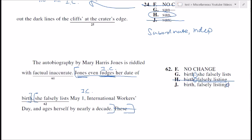There's another option placing the colon after 'falsely listing,' so the sentence would read 'Jones even fudges her date of birth, falsely listing: May 1st...' But 'Jones even fudges her date of birth, falsely listing' is not a complete sentence — remember, colons must follow things that can stand alone as sentences. Answer G works well: 'Jones even fudges her date of birth' — then a colon to clarify how she does so. Because this is an independent clause, we can use a colon. What comes after a colon can be an independent clause or not — either way works, as long as what comes before it is an independent clause.